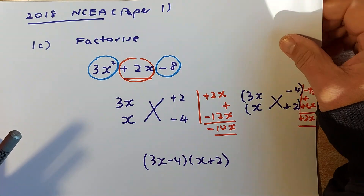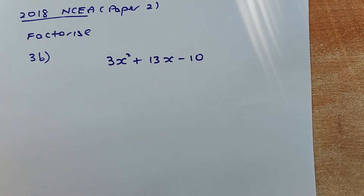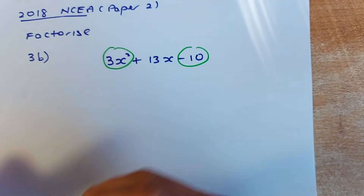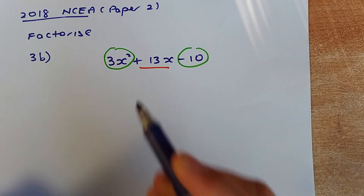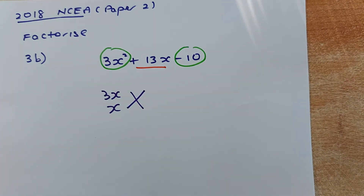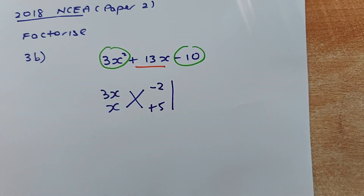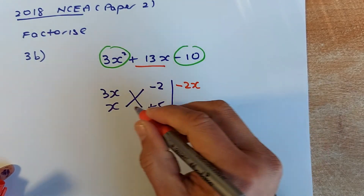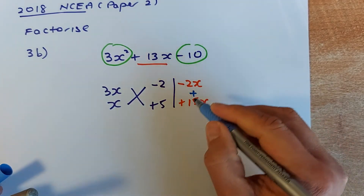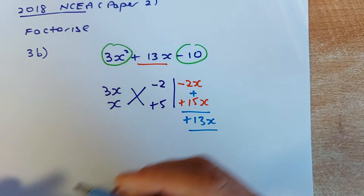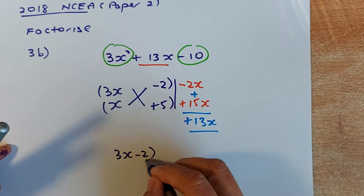Finally, the 2018 Paper 2 example. Step 1: do a bubble — first bubble, second bubble — and find the middle expression, which is +13x. For 3x², the only possibility is 3x and x. Think about how to get 13: try negative 2 and positive 5. Cross multiply: x times -2 is -2x, and 3x times 5 is +15x. Add them up: 15x minus 2x is +13x — that matches!